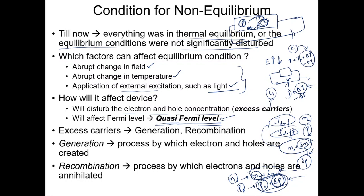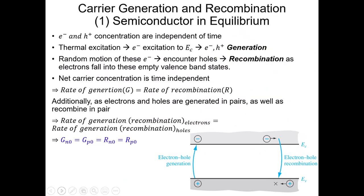Since excess carriers generate together, they are also bound to recombine together. We will see how recombination and generation happen. Generation is a process in which electrons and holes are created, while recombination is a process where electrons and holes are annihilated — they are gone from the system.